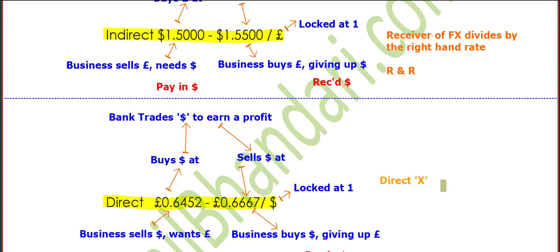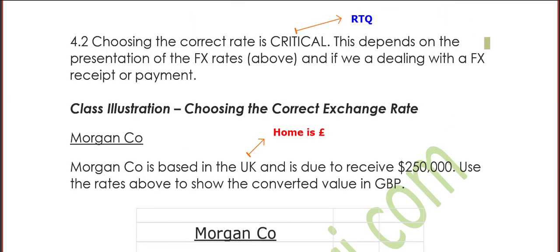Let's take a look at a very small illustration showing how we can use these particular rates. Choosing the correct rate is absolutely critical as far as the exam is concerned. Make sure you read the question carefully about whether the rates are in indirect or direct format, and whether you're dealing with a receipt or a payment. Here, Morgan is based in the UK with home currency sterling, and is due to receive 250,000 American dollars.